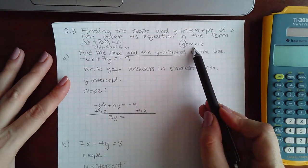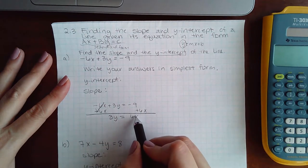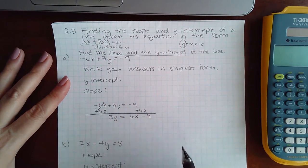And remember you want your x values in front of your constants. So I'm going to put the positive 6x in the front and the minus 9 in the back.